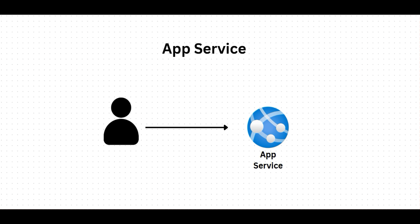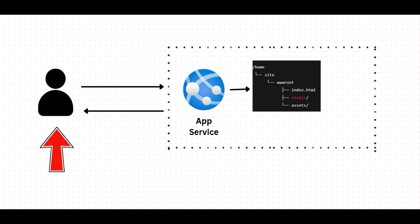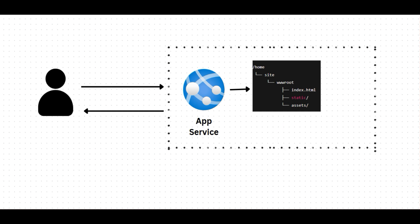Now let's talk about what happens in the background when we use Azure App Service. Imagine a user accessing your app deployed on Azure App Service. Behind the scenes, your code gets deployed into a directory structure inside the App Service instance — typically stored under the home/site/wwwroot folder. This is where your static files or build folder — for example, your index.html, JavaScript, and CSS files — are hosted. These files are then served to the end user via the App Service public DNS endpoint.